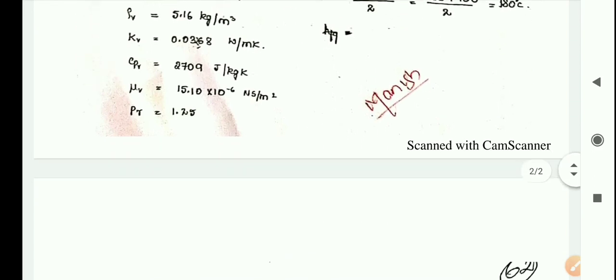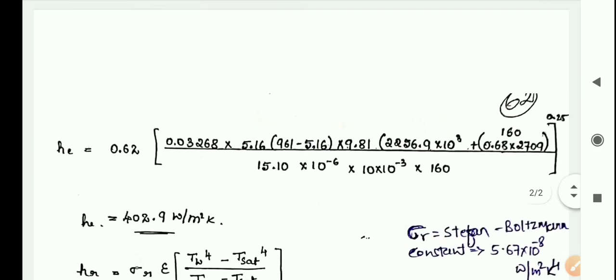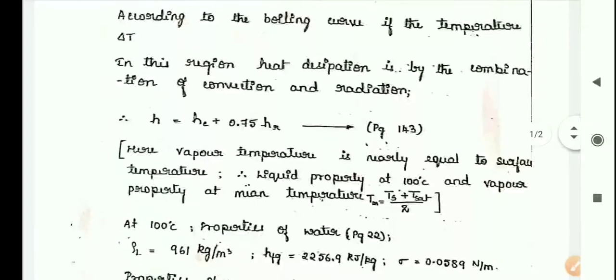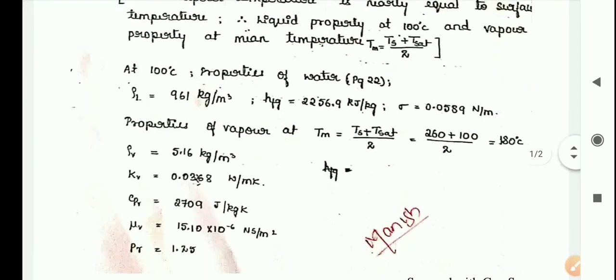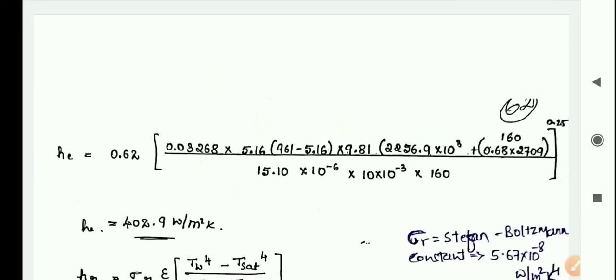In this formula h equals hc plus 0.75 hr, the unknown term is hc. So we have to first find hc value. For hc, the formula is given on page number 143 for film boiling. The first formula is hc equals 0.62 times...